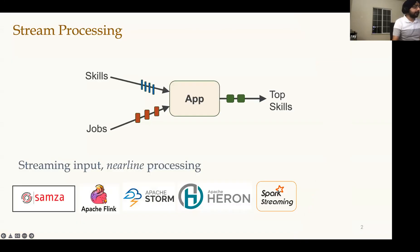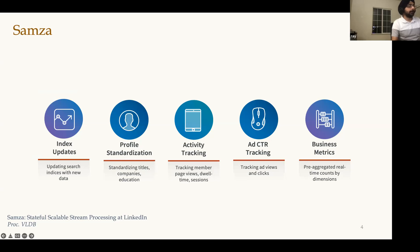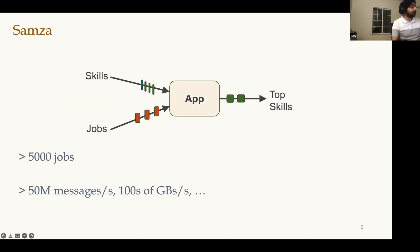Stream processing is everywhere — Samza, Flink, Storm, Heron, and many others. Samza is LinkedIn's homegrown stream processing system. You use these systems anytime you need real-time or near real-time output, covering applications like notifications, activity tracking, classification, site speed, call graph analysis, and index updates. Today LinkedIn's Samza team runs more than 5,000 different computations, processing hundreds of millions of messages per second and thousands of gigabytes per second.